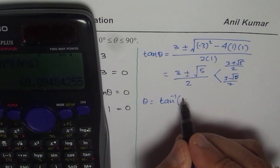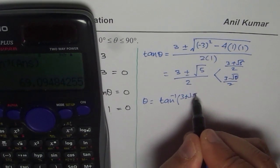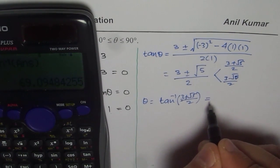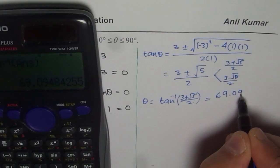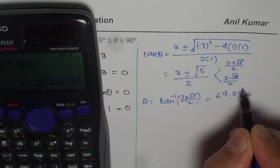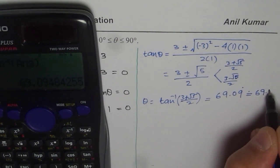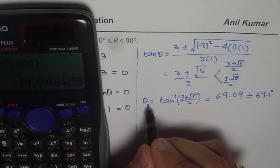And we get some value, this is with the plus sign. So 3 plus square root of 5 over 2, we get 69.09 which I will round to 69.1 degrees. This is one value of θ.